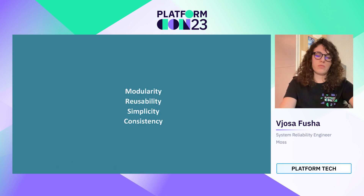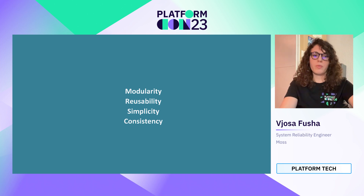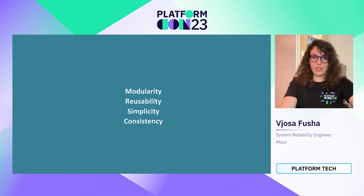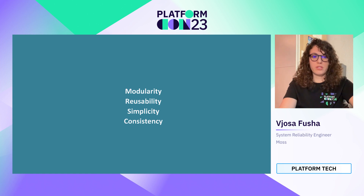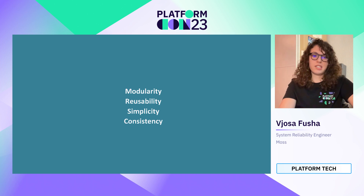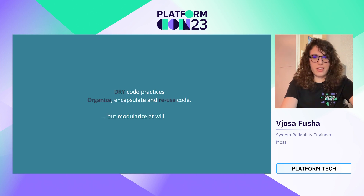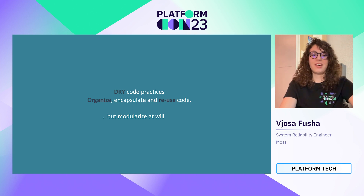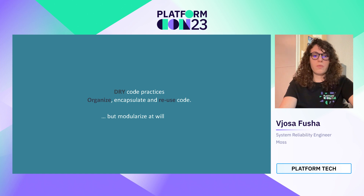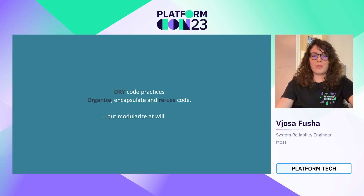Why do we use modules? First, modules are designed to be modular, making it easy to reuse code across different projects. Then simplicity — modules provide a simple and easy to understand way to provision infrastructure resources using code. And then consistency — modules allow you to create consistent infrastructure across different environments, ensuring that your resources are provisioned in the same way you intended. In other words, it helps us follow DRY code principles by organizing, encapsulating, and reusing code. But let's not forget that modularizing configuration is needed only when we use repeatable configuration in our projects, so modularize at will.